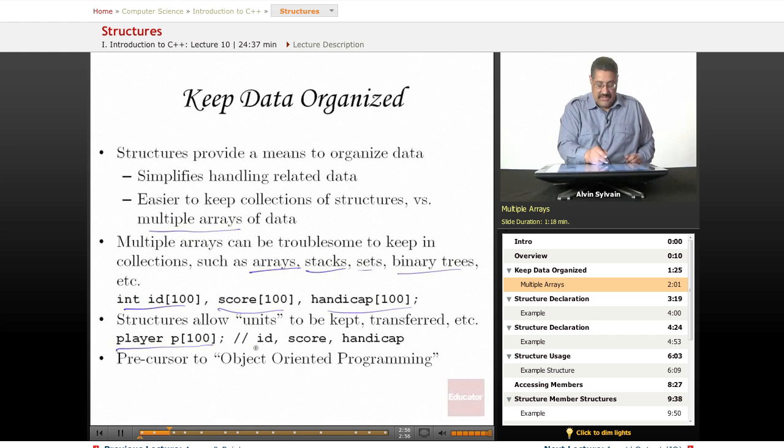But if we have a player which consists of the ID, the score, and the handicap, it's much simpler to deal with. Now we can put this player into a binary tree or into an array. This leads us up to object-oriented programming, which will be covered later. You could consider this as an object.